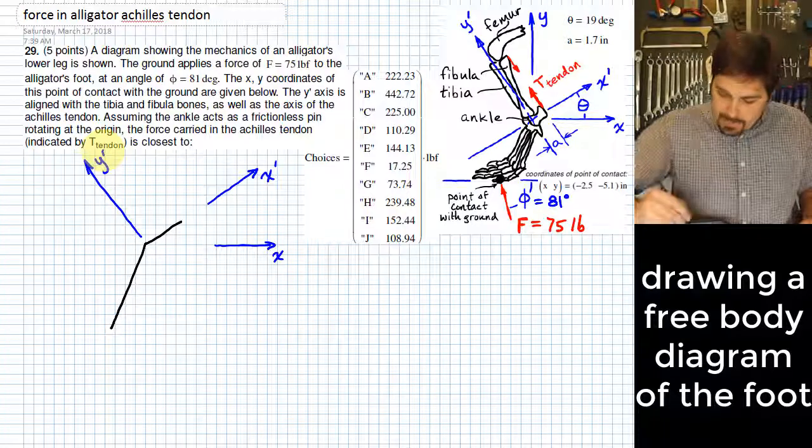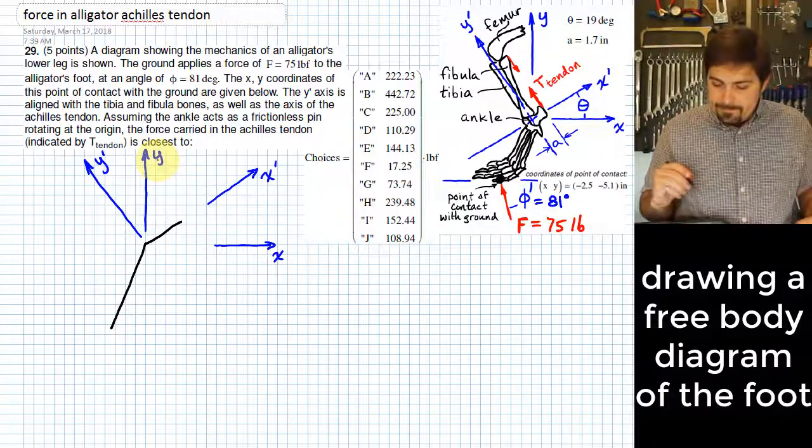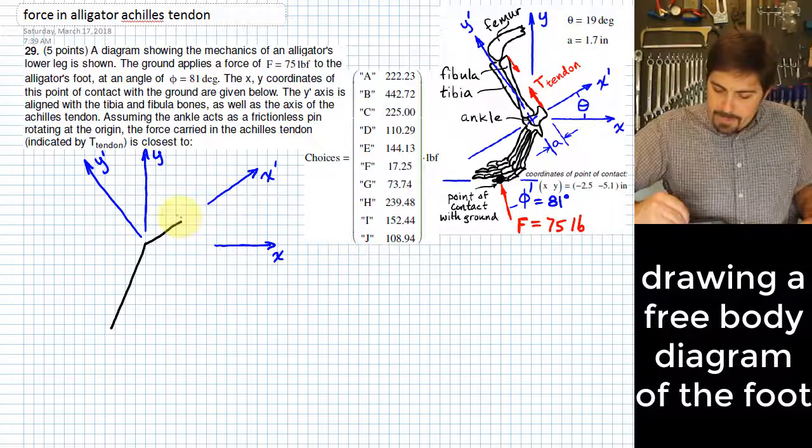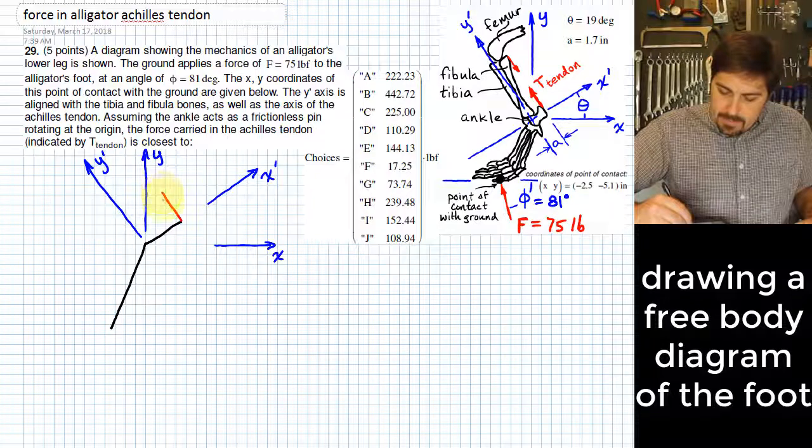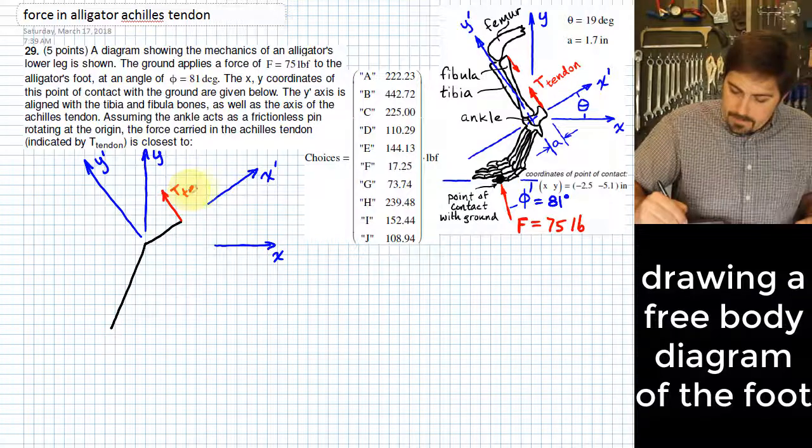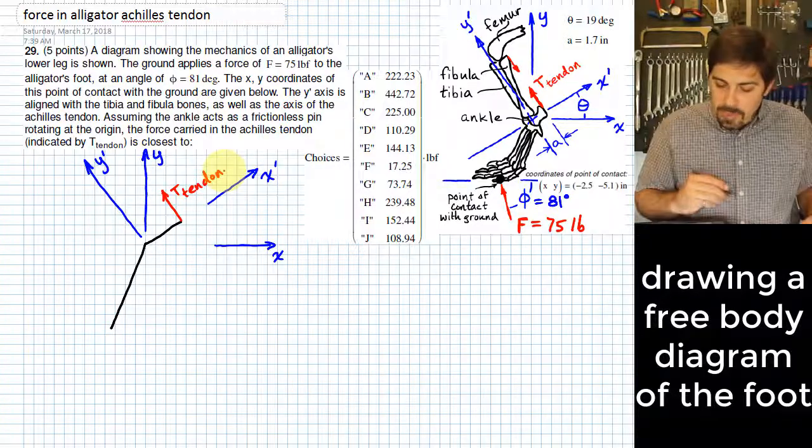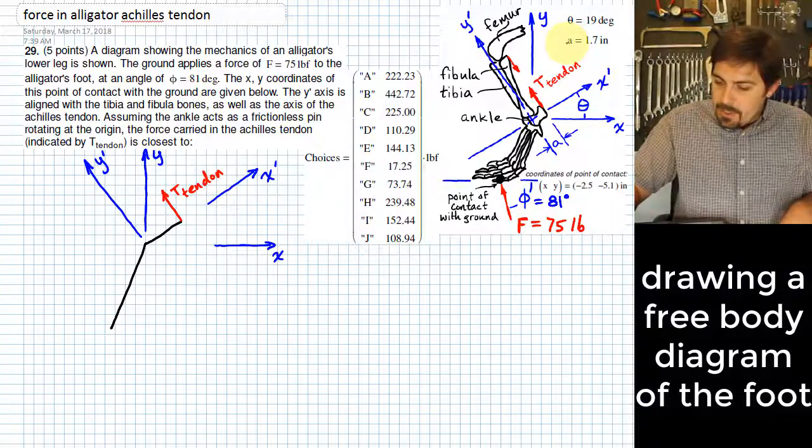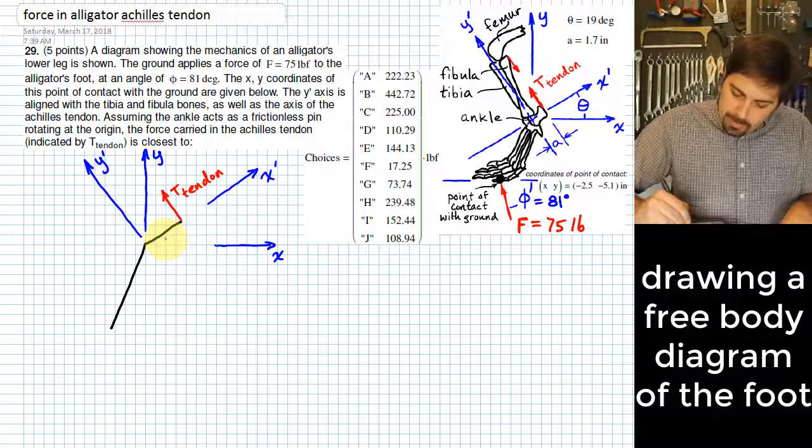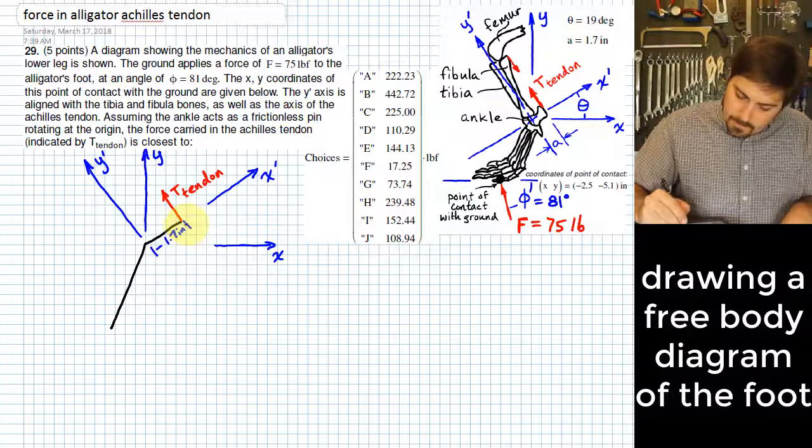And then we of course have the regular y-axis pointing up like this. One of the forces is actually not that hard to put on here, because it is that force in the tendon that we are trying to find. It's actually called T-sub-tendon here. That's what we are trying to find, and it is parallel with the y-prime axis. One of the pieces of information we know is that A is 1.7 inches, and so I'll put on here right away that it's 1.7 inches across right there.